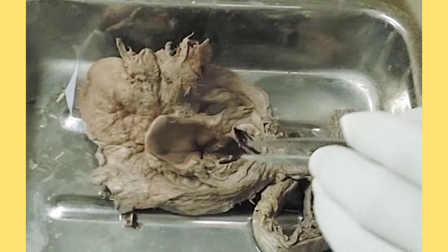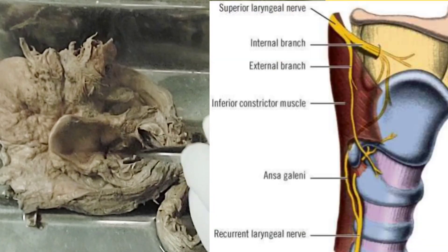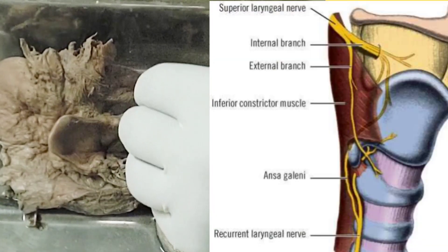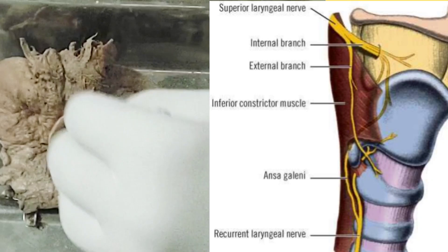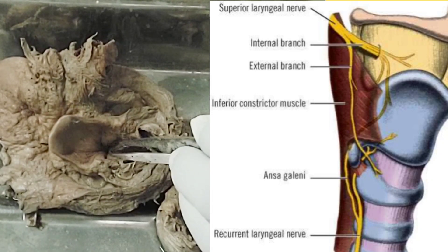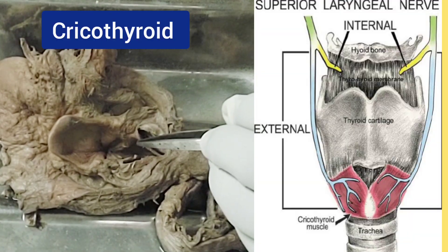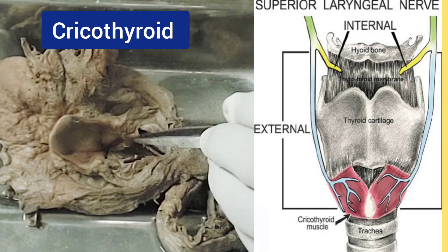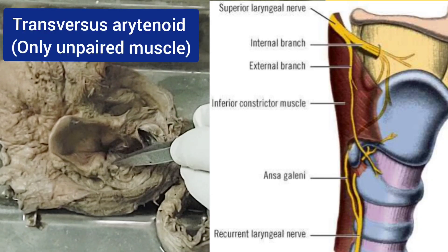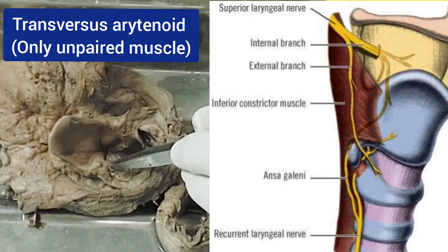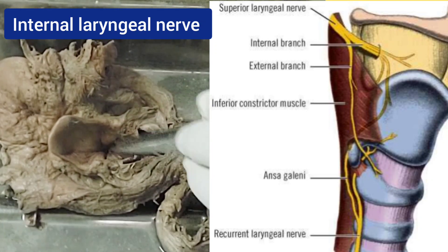What is the nerve supply of the larynx? The mucous membrane above the vocal folds is supplied by the internal laryngeal nerve, and below the vocal folds it is supplied by the recurrent laryngeal nerve. Regarding the muscles, all intrinsic muscles are supplied by the recurrent laryngeal nerve except the cricothyroid, which is supplied by the external laryngeal nerve. The transversus arytenoideus, the only unpaired muscle, has a double nerve supply: one is the internal laryngeal nerve and one is the recurrent laryngeal nerve.